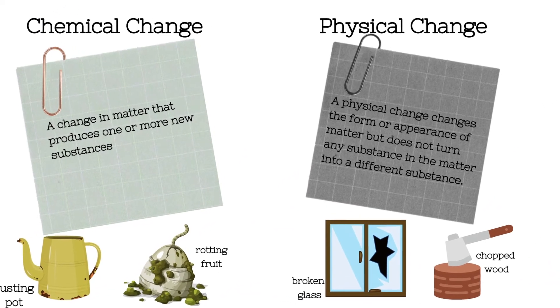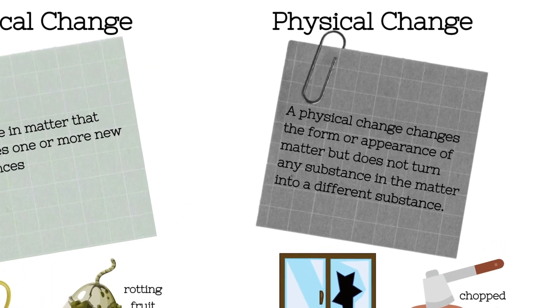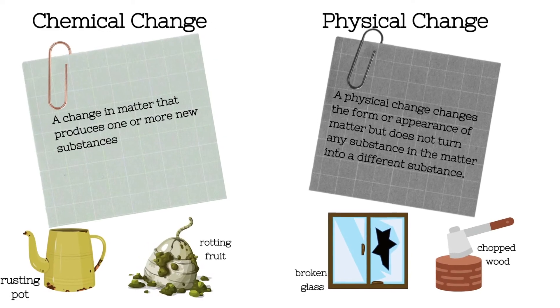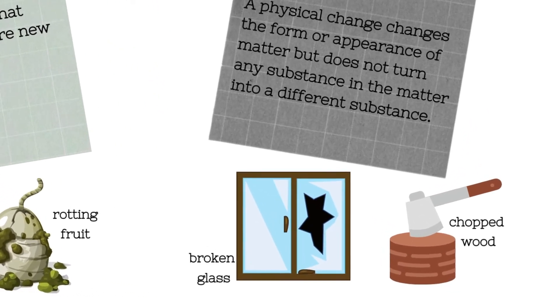A physical change is a change in the form or appearance of matter, but it doesn't turn that matter into a new or different substance. Examples here include broken glass or chopped wood.